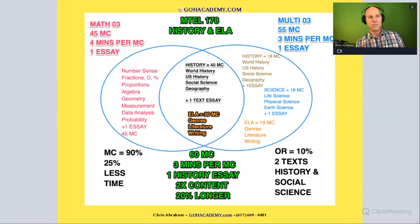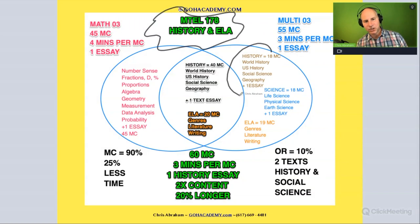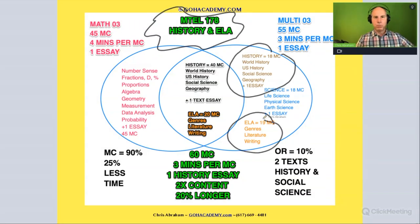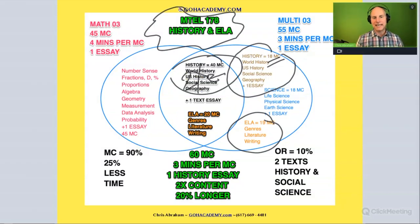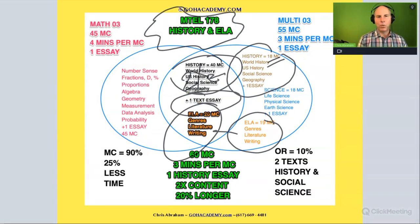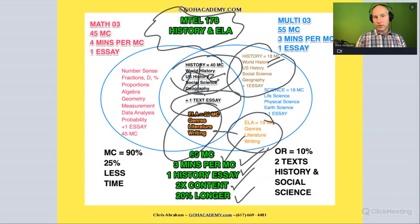To review: the new general curriculum 178 takes history and language arts and puts them into one test. You're going to have twice as many history questions — moving from 18 history questions to 40 — which means over double the content in history. ELA will be about the same, and you'll still have one essay, but with a totally different structure than the previous essays.